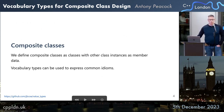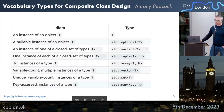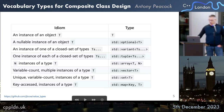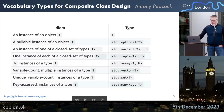We define composite classes as a class with other class instances as members. Vocabulary types can be used to express common idioms. If we want to express an instance of an object, we just have a T. A nullable instance is std::optional<T>. An instance of one of a closed set of types is std::variant. One instance of each of a closed set of types is std::tuple. N instances of a type is std::array<T, N>. Variable count multiple instances is std::vector<T>. Unique variable count instances is std::set<T>. Key-accessed instances is std::map<Key, T>.